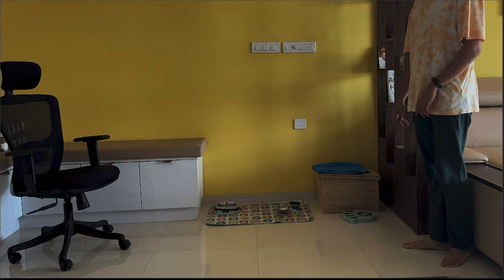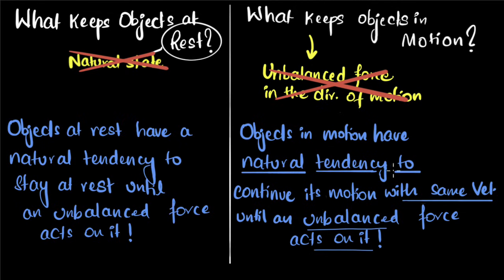To convince ourselves, we can do a thought experiment. Say we kick the chair twice — once on ice and the second time on grass with the same force. The chair would travel much farther on ice before coming to a stop compared to grass, because ice has less friction. Because there is less friction, it takes more time to stop. Because there's friction and air resistance everywhere, it makes us feel as if moving things have a natural tendency to stop — but that's not true. Objects in motion have a natural tendency to continue their motion until an unbalanced force acts on them.